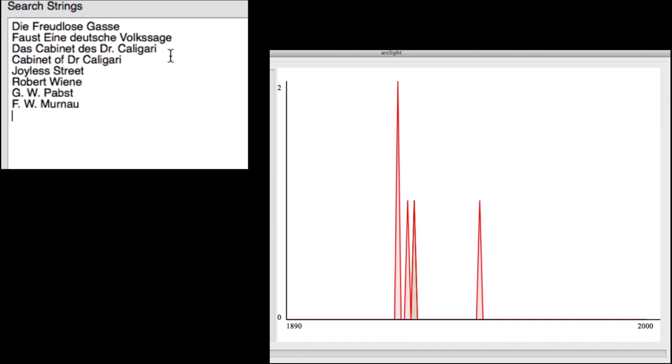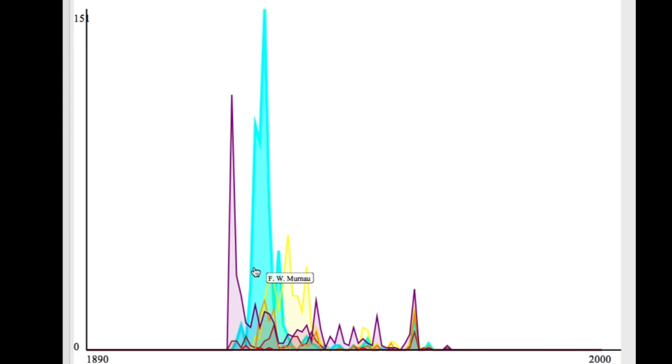Since our corpus is heavily focused on US media, a list of foreign films may have low results. But with Arclight, we can see which and when foreign films or filmmakers begin showing up in our corpus, and begin formulating new questions of why certain entities are showing up in a corpus that is not geared toward that list.